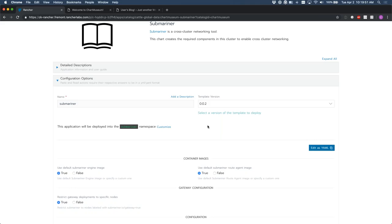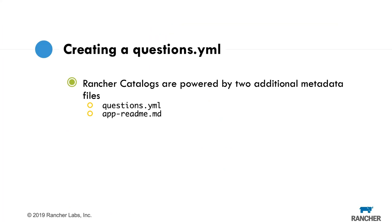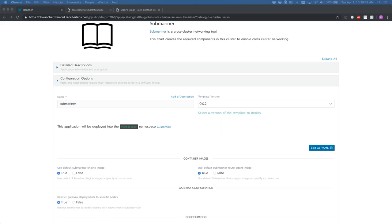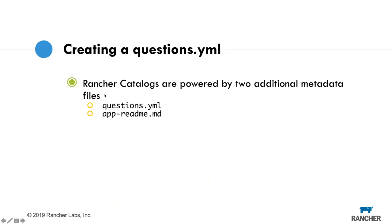Rancher catalogs are powered by two additional metadata files: the questions.yaml and the app-readme.md. Detailed documentation on these can be found in the Rancher docs under Catalogs and Apps, then Custom Catalogs.